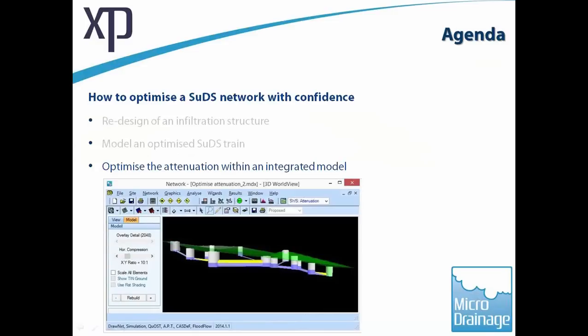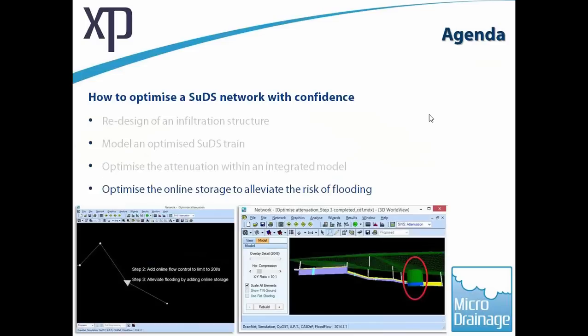The next step is to take that SUDS train and integrate it into a model comprising all the flow conveyance systems, as well as online and offline storage and controls. The intention is to optimize the attenuation already available within the model, and then restrict the discharge off-site down to, say, 20 liters per second. The program will then optimize online storage to alleviate any flooding created by adding that flow restriction at the downstream end.